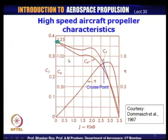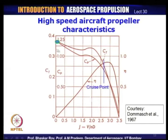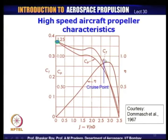For a high-speed aircraft, the cruise is again near the maximum propeller efficiency to get the best fuel efficiency of the power plant. It does not use maximum power or maximum thrust coefficient; those are highest during takeoff and climb. The advance ratios here are on the higher side compared to the low-speed case — of the order of 3.5 maximum — and you are probably operating at an advance ratio somewhere near 2.6, as this is a comparatively high-speed aircraft deploying a propeller for thrust.